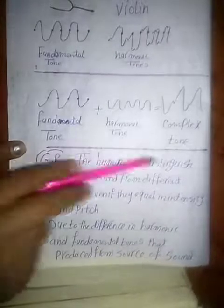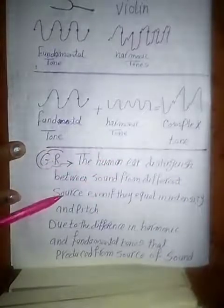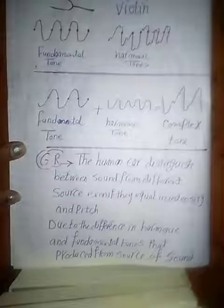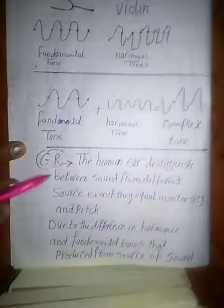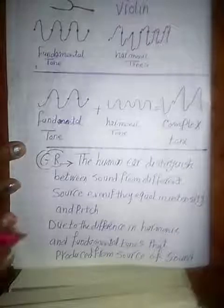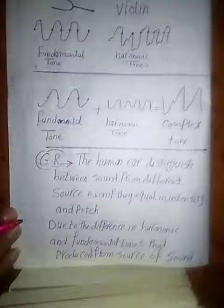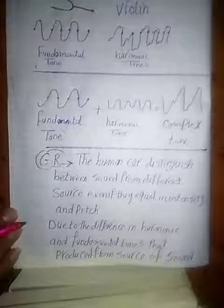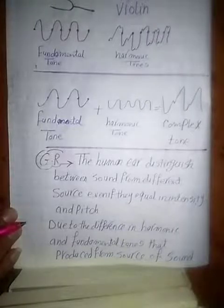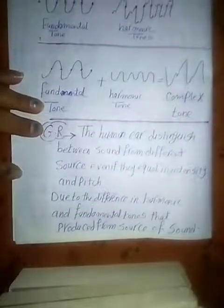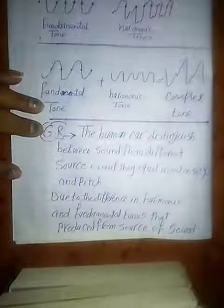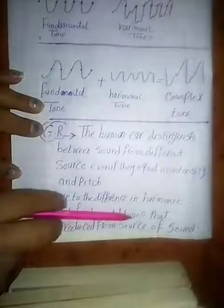The human ear can distinguish between sounds from different sources even if they are equal in intensity and pitch. For example, when a violin and a piano play at the same intensity and the same pitch, you can still differentiate between them. This is because the harmonic tones and fundamental tones produced by each source are different.